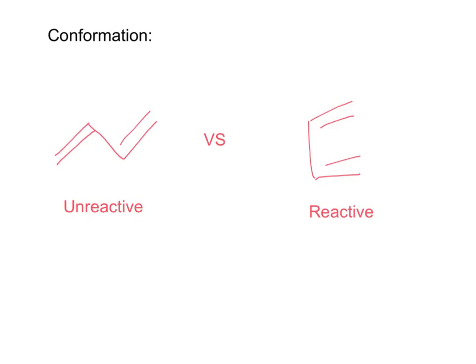For the Diels-Alder reaction to occur, the 1,3-diene must be in the S-cis conformation, shown here, which is reactive. The S-trans conformation is not reactive, and therefore to conduct a reaction with it, it must be converted into the S-cis conformation.